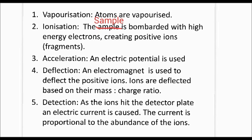Once you've got the ions, step three is acceleration. Electropotential is used to accelerate the ions so they pick up speed and go down the mass spectrometer. Step four, they're then deflected — an electromagnet is used, generating a magnetic field, which deflects the positive ions. How much they're deflected depends on their mass-to-charge ratio. You should always specify mass-to-charge ratio; some people simplify and just talk about mass, but it's really mass-to-charge ratio.